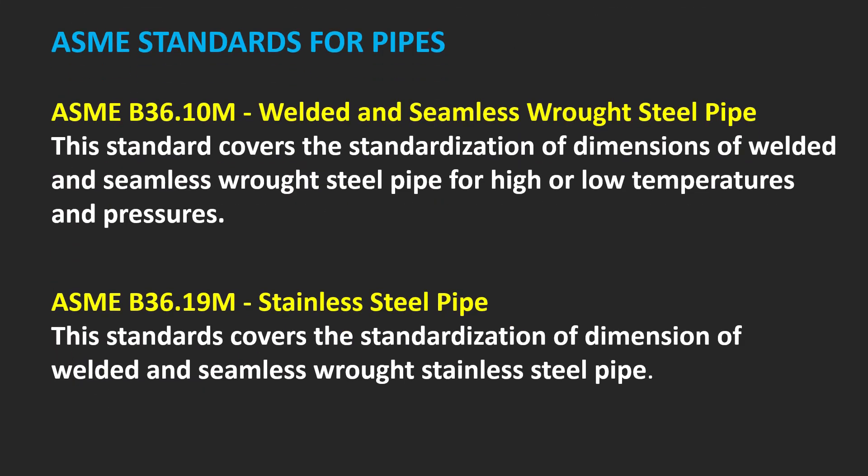ASME Standard for Pipe: ASME B36.10M covers welded and seamless wrought steel pipe — the standard covers the standardization of dimensions for high or low temperatures and pressures. ASME B36.19M covers welded and seamless wrought stainless steel pipe.